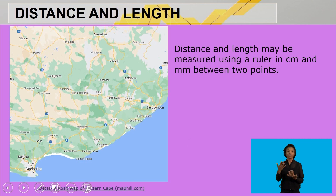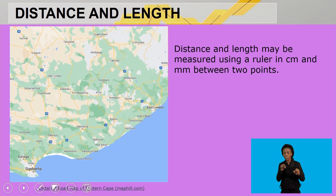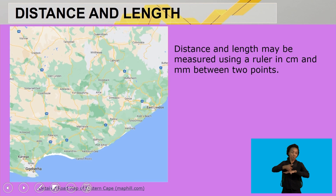The distance and length may be measured using a ruler in centimeters and in millimeters between two points. Remember, centimeters will have a decimal value, while millimeters will have whole numbers when the distance is measured.